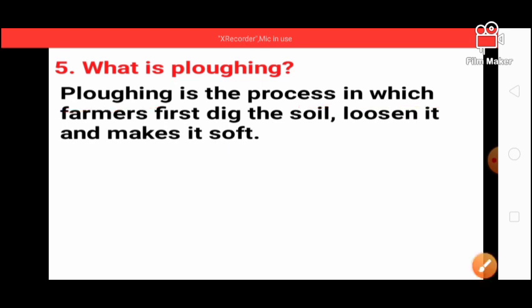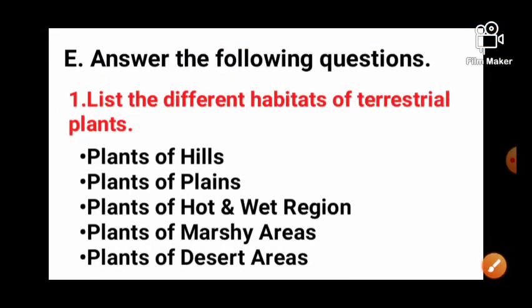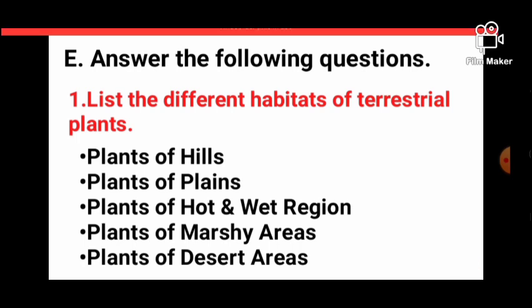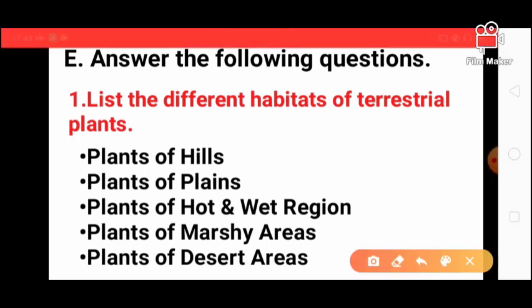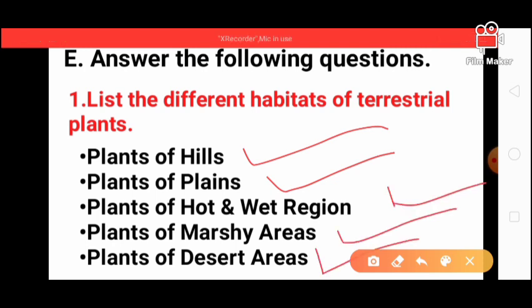Next, list the different habitats of plants. Terrestrial plants grow in hills area, plains, hot and wet regions, marshy areas, even desert areas. They can grow in various habitats.